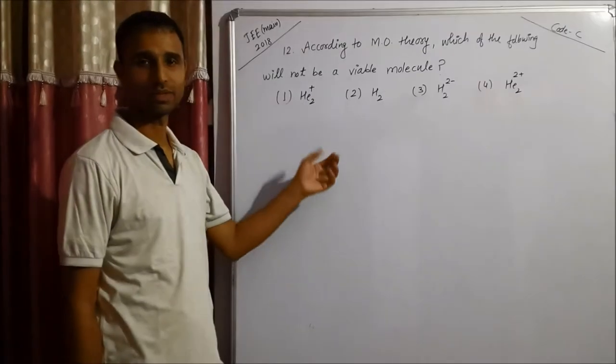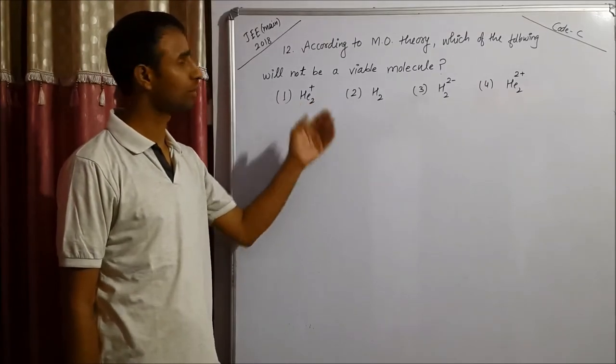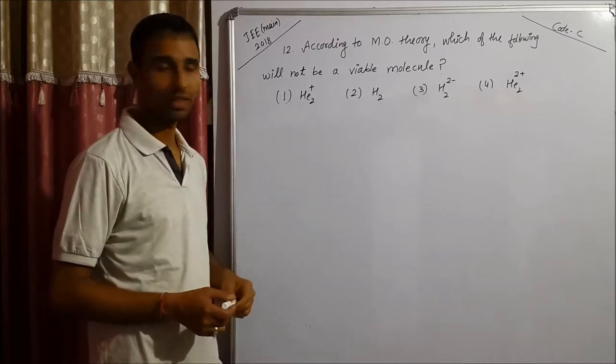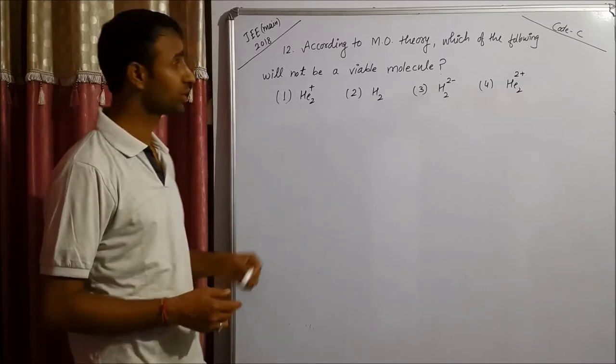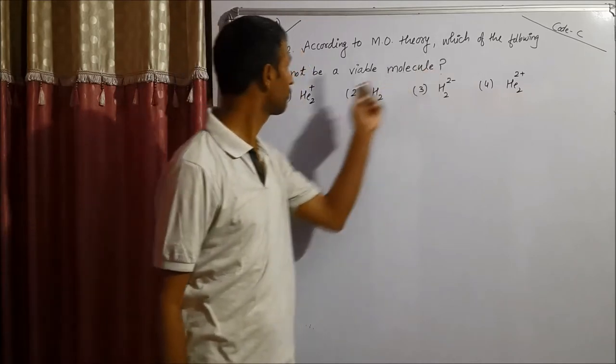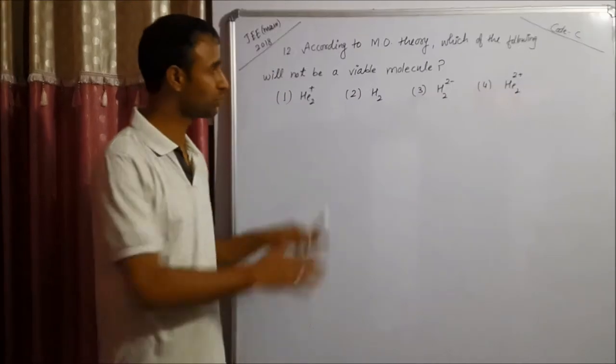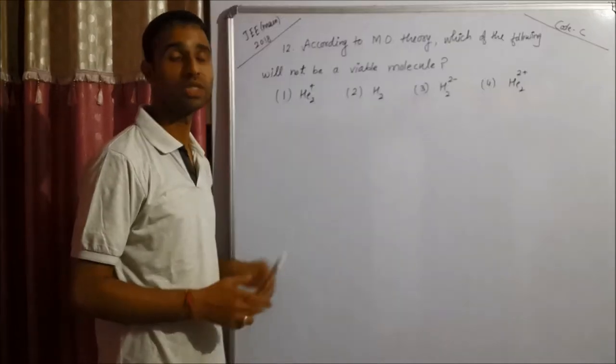Hi friends, this is the question from JEE Main 2018, code C, question number 12. The question is, according to MO theory, which of the following will not be a viable molecule, which does not exist.